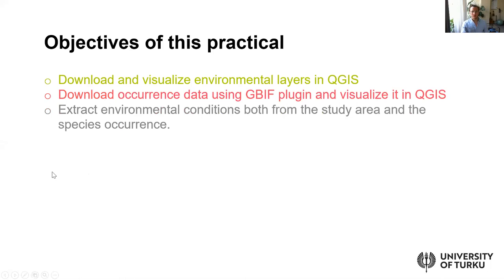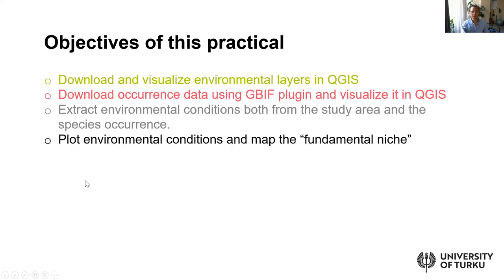Those first two objectives form the first part of this practical. Then we're going to use available information from the course file link to extract environmental conditions from the whole study area — in this case, focusing on South America and one focal species, the Brazilian nut, which we discussed in previous sessions. We'll also plot the environmental conditions and map the fundamental niche, visualizing data in both environmental space and geographic space.